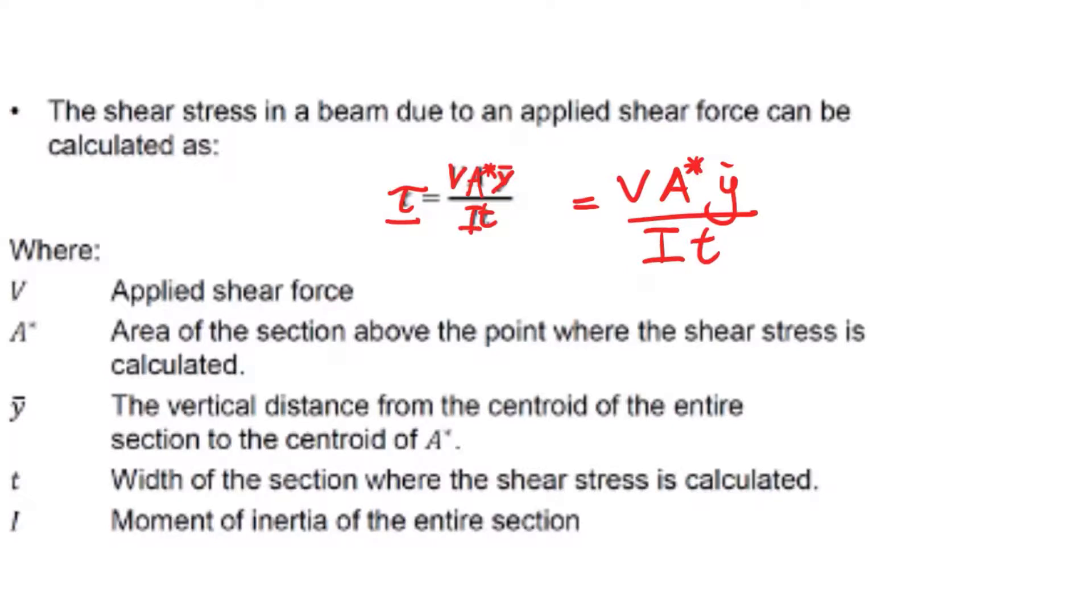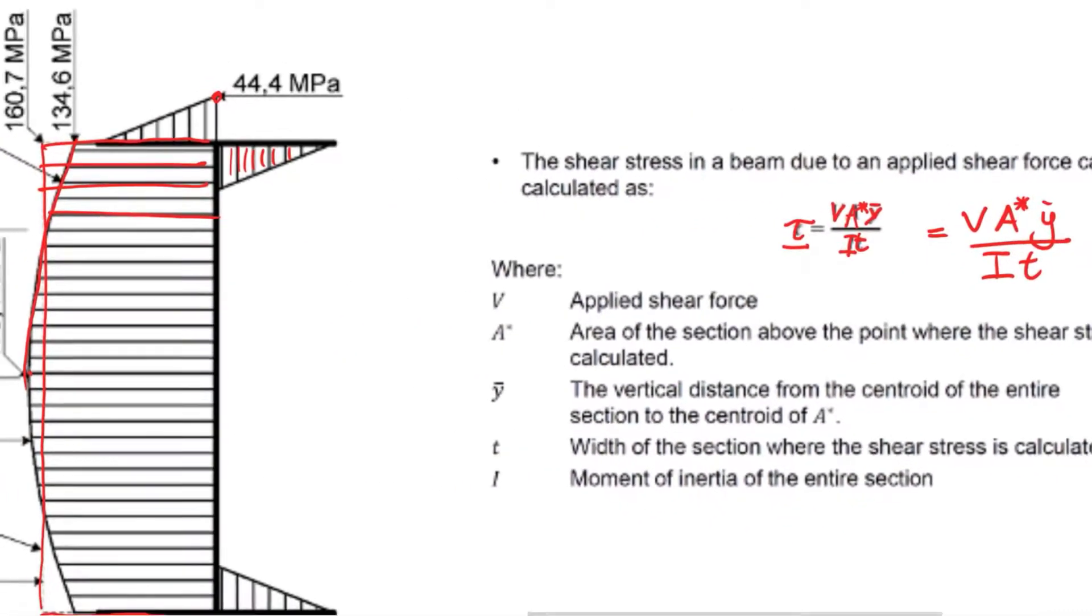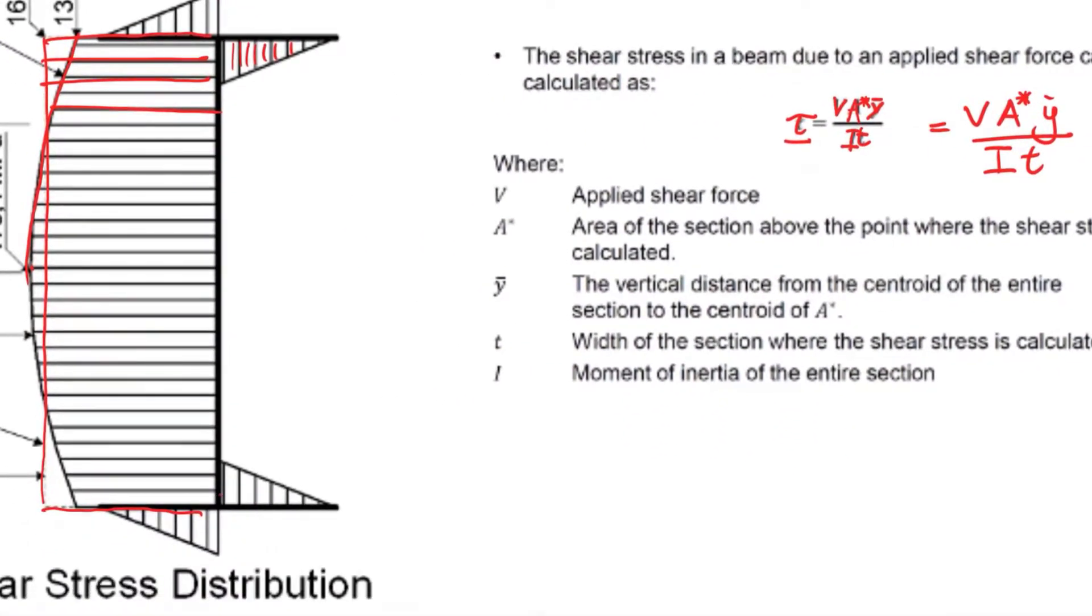This is a stress at a point. What you would do is you would calculate the stress at each position, so we'd calculate tau there and tau there, etc. To be honest, we would probably just do it once in the flange, once in the web, and then once more in the web, and just plot a curve. But if you were a computer, you'd calculate lots of positions and then join them all up and you would get this distribution as shown here.